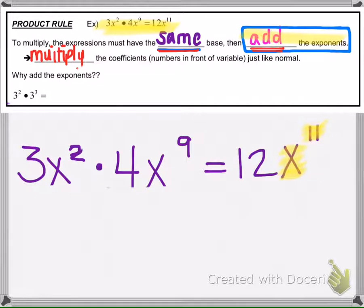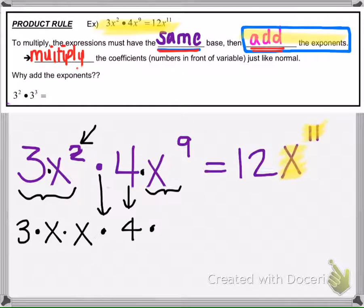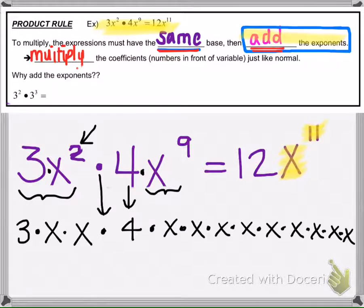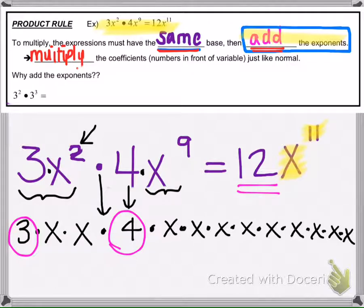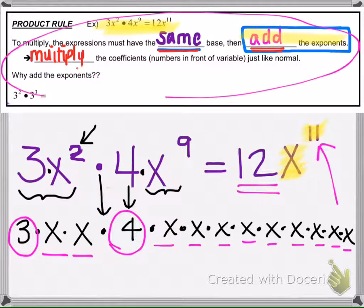If I forget the rules, I can always break it up into expanded form. So 3x squared means 3 multiplied by two x's, times 4 multiplied by nine x's. Using the commutative property, 3 times 4 gives 12. Then counting all the x's — there are 11 of them — gives x to the 11th. That's the long way, but using the rule saves time.